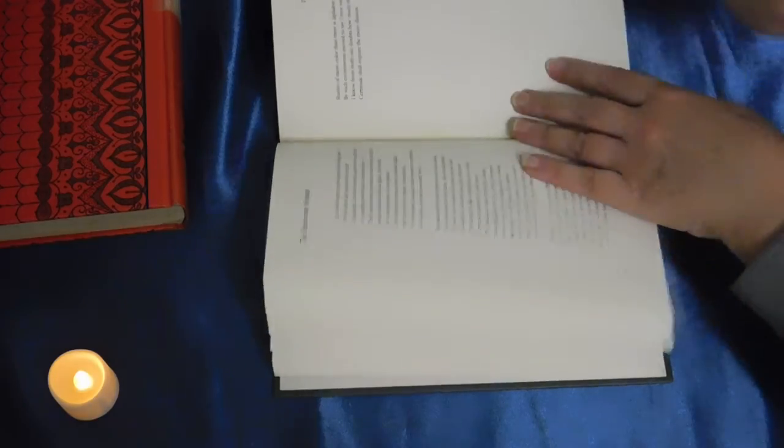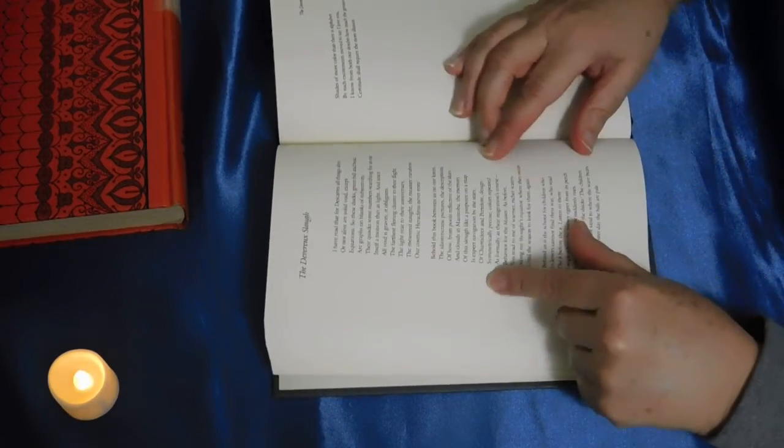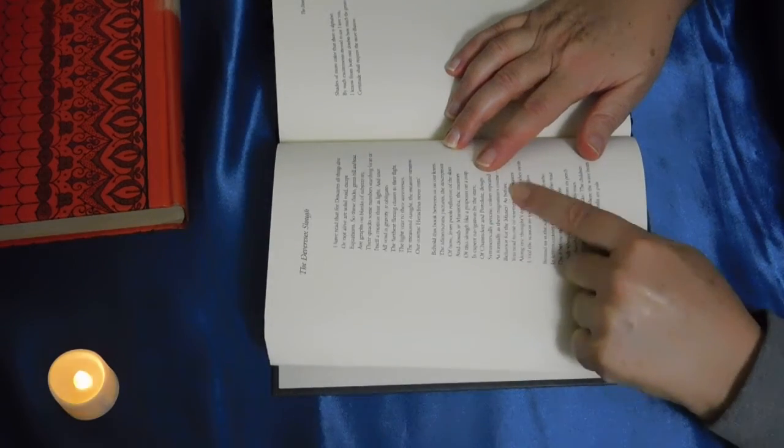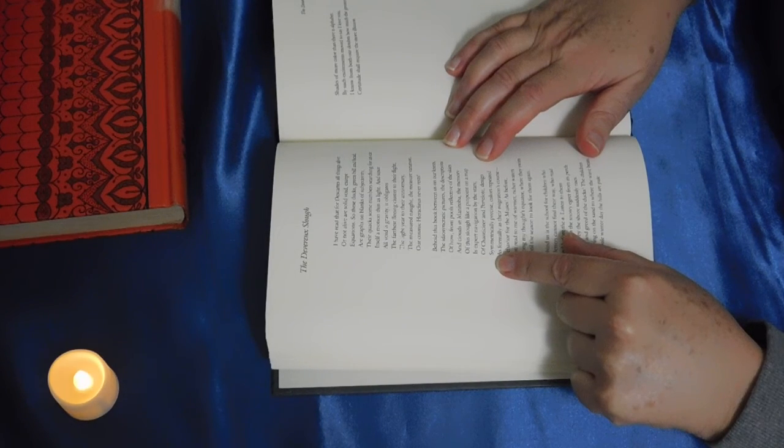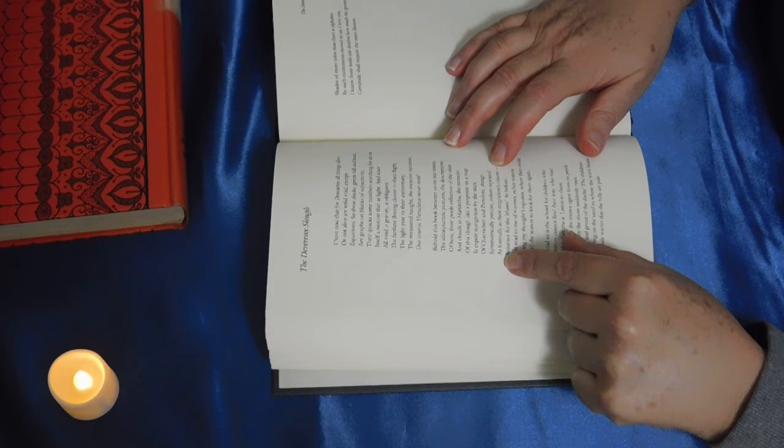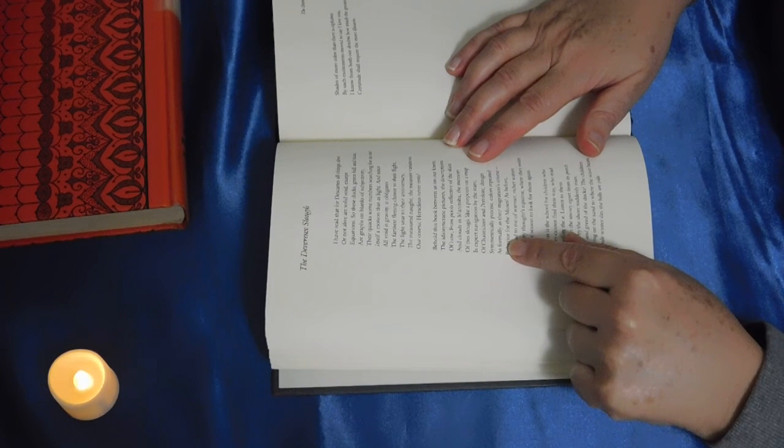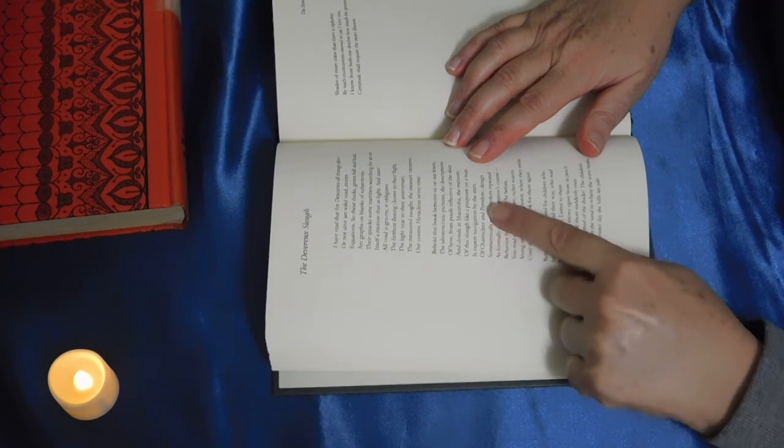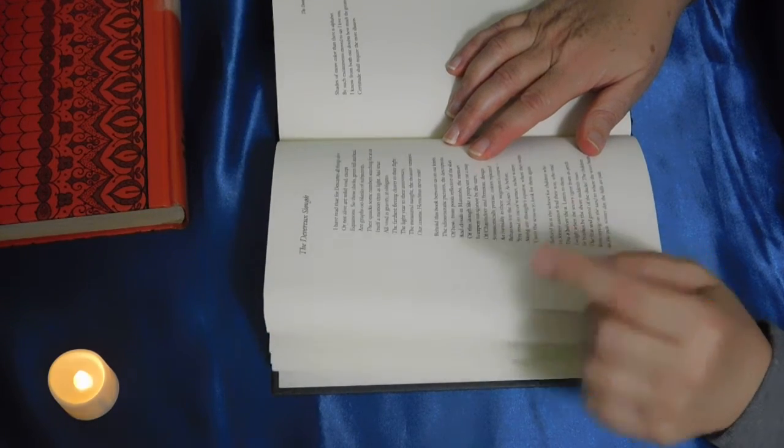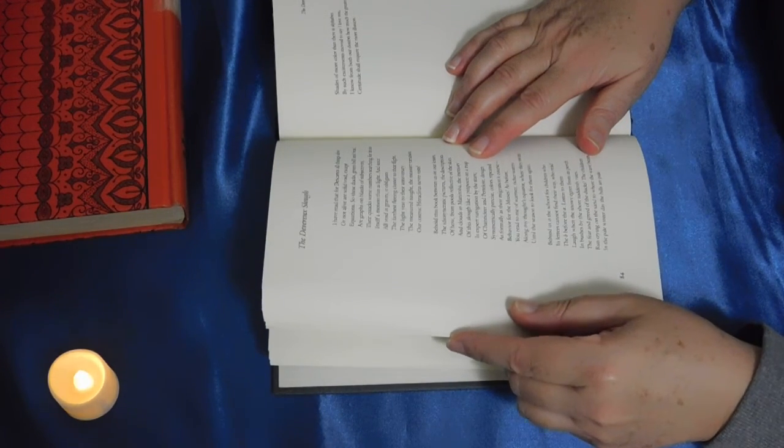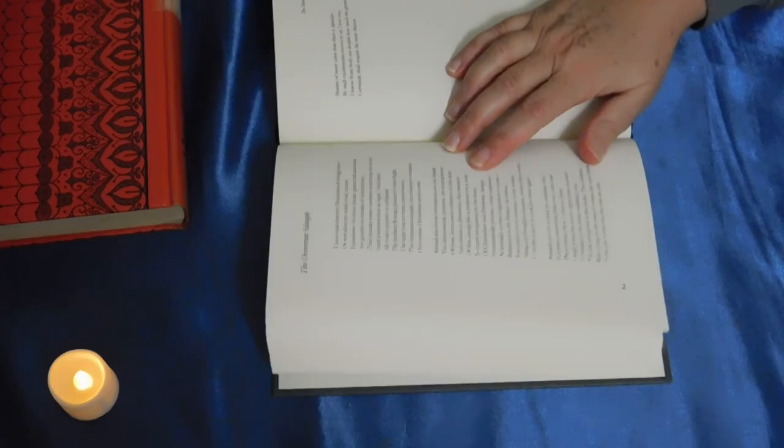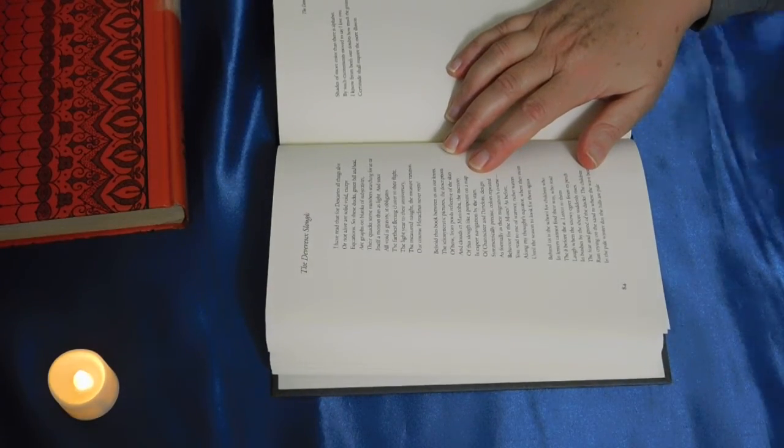I clearly don't know my tales. So one of the things that I was thinking about here is, so I read that and I was stuck on that word. But then it says, design symmetrically precise, colors repeated, as formally as their migrations course. And so I was thinking about Chanticleer and Pertilote, and was trying to figure out the precision. It could just mean the patterns of the feathers. It could be something quite simple. Anyway.